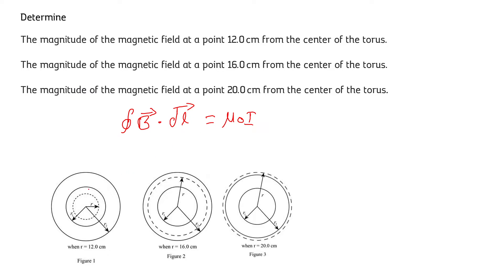The toroid contains current on its loops, but inside the inner radius there is no current passing through the enclosed loop. Therefore, the current inside the loop is 0, so the magnetic field inside the inner radius is 0. This means the magnetic field at a distance of 12 cm from the center is equal to 0.